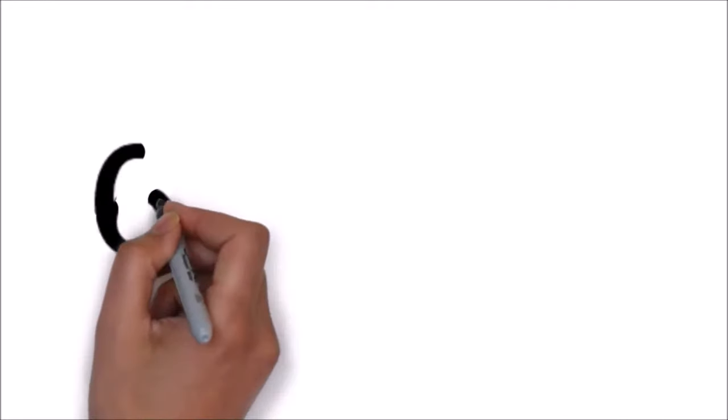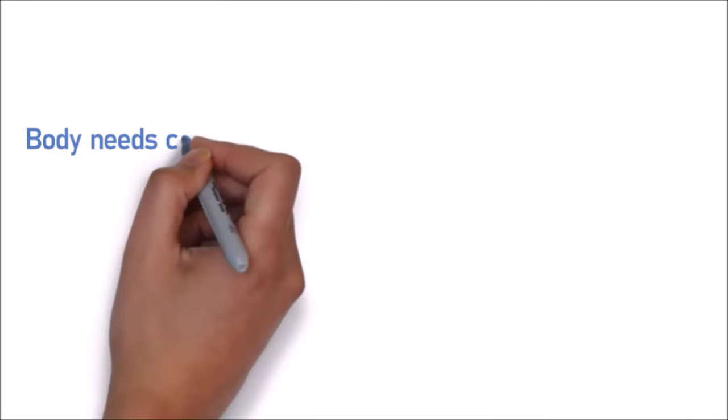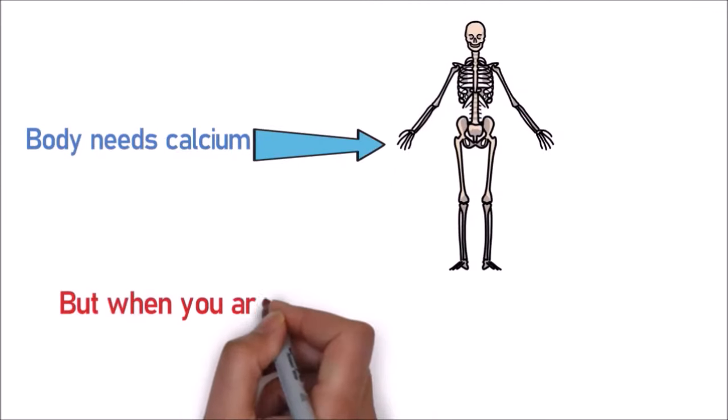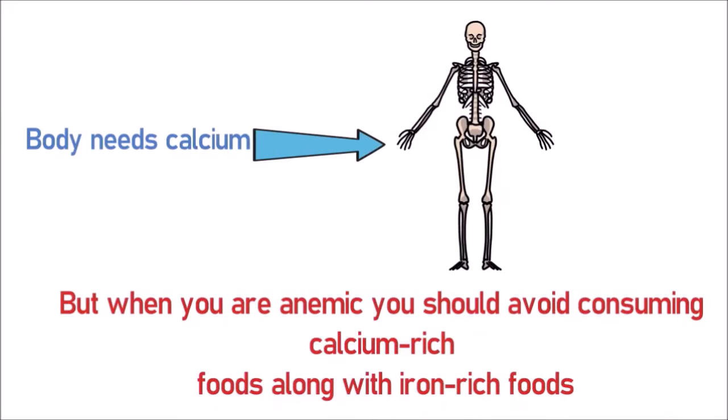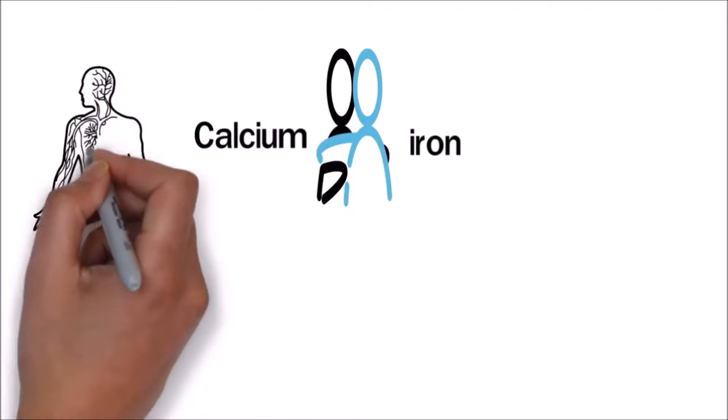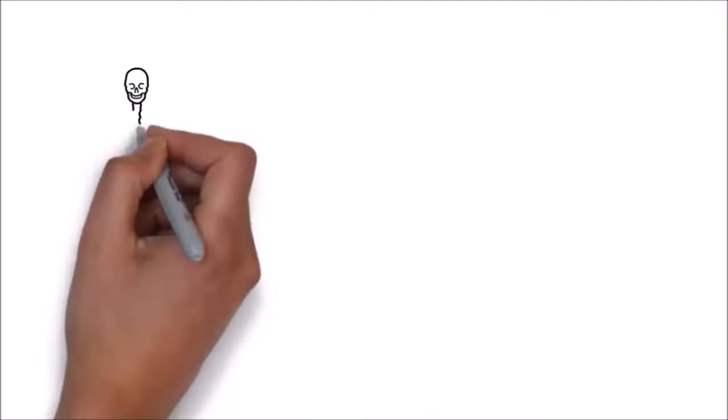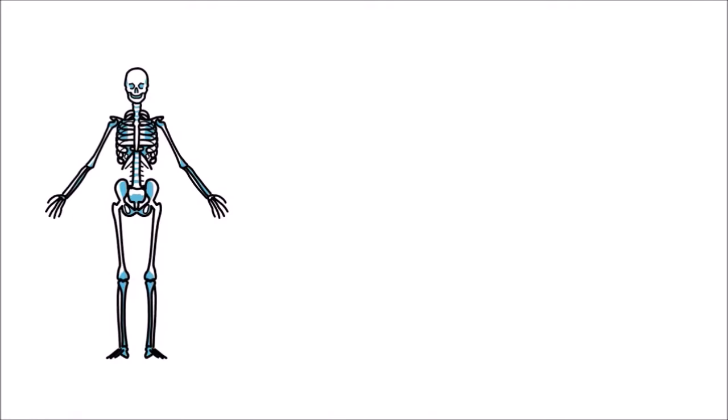Number 6: Avoid eating calcium-rich foods and iron-rich foods together. Your body needs calcium to impart good bone health, but when you are anemic, you should avoid consuming calcium-rich foods along with iron-rich foods. Calcium binds with iron and interferes with your body's ability to absorb iron, which can worsen your condition.